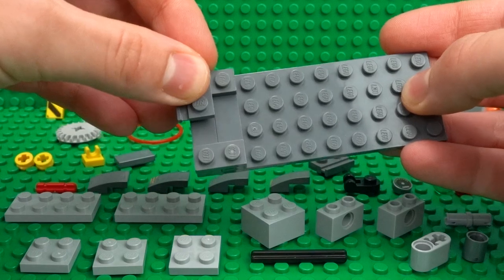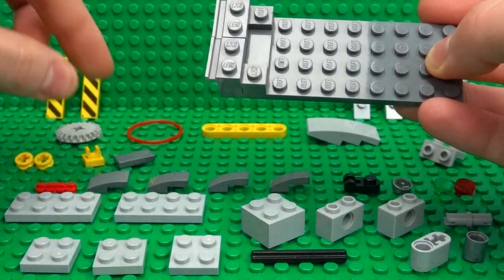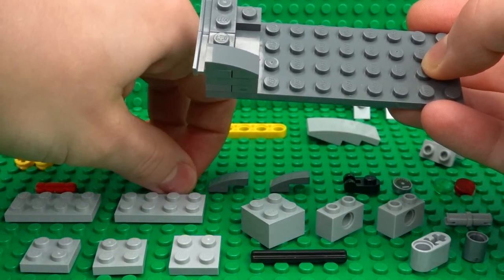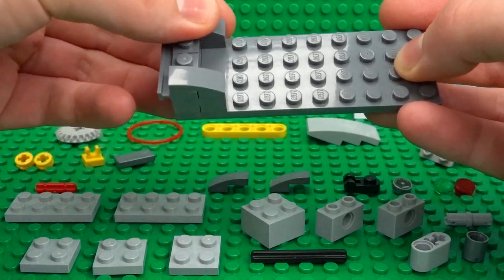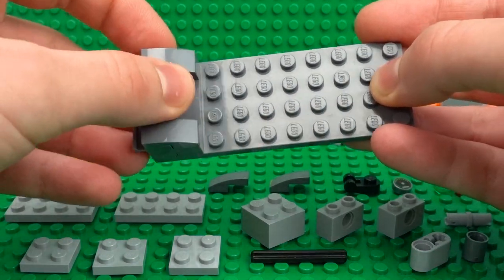And you can finish that off with a couple of these 1x2 slope pieces that will neaten it up and smooth this front section off, as well as our 1x2 tile. I'll show you what this area is used for once we've built the rest of it.